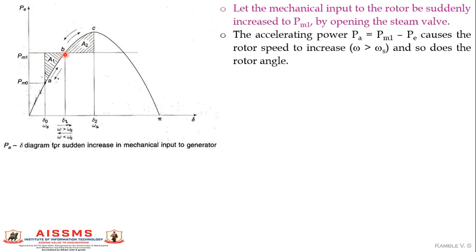When the rotor reaches point B, the angle equals delta1 and the corresponding mechanical input is Pm1. At this point, Pm1 equals Pe1, so the rotor should stop accelerating — this should be the new operating state. However, due to the moment of inertia, the rotor does not stop at point B. Since rotor speed is still greater than synchronous speed, it continues moving in the forward direction.